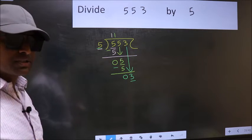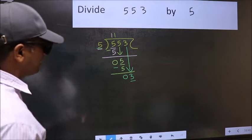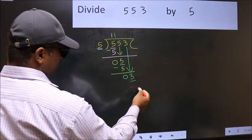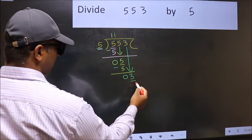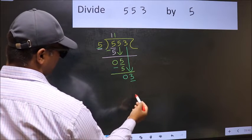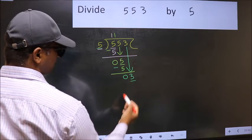Instead, what you should think of doing is, what number should we write here? If I take 1 here, we will get 5. But 5 is larger than 3.